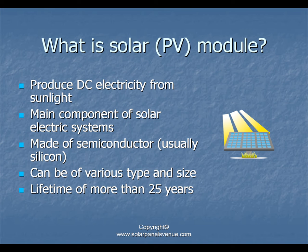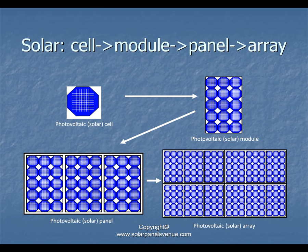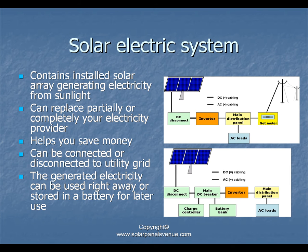Photovoltaic modules generate DC electricity. They are produced in various types and sizes and have a lifetime of more than 25 years. Solar modules consist of solar cells connected together to achieve higher energy output, and solar modules are connected in solar arrays. The main types of photovoltaic units are: solar cell, solar module, solar panel, and solar array.